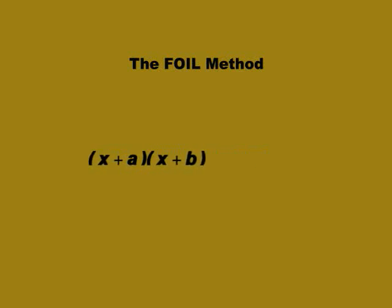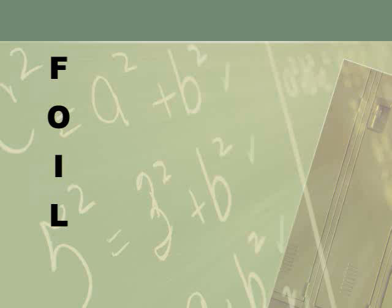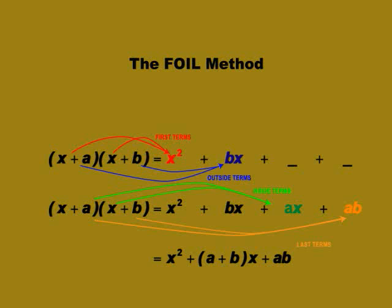In this lesson we look at the FOIL method where two binomials are multiplied. FOIL is an acronym and is itself an example of a memory technique. The acronym stands for First, Outside, Inside and Last, indicating the order in which you are to multiply pairs of terms from the two binomials.